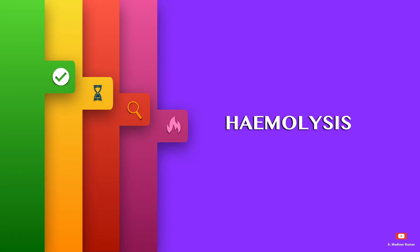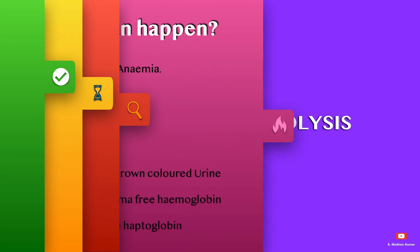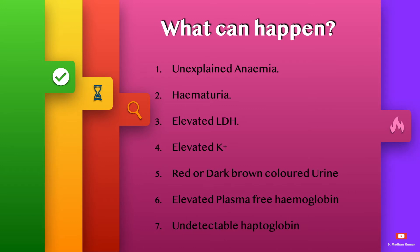Hello everyone. Under the ECMO troubleshooting simplified series, today we will see about hemolysis on ECMO. Hemolysis on ECMO can lead to unexplained anemia, hematuria, elevated LDH, elevated potassium, red or dark brown colored urine, elevated plasma free hemoglobin, and undetectable haptoglobin.